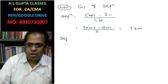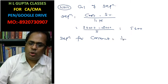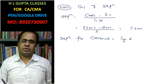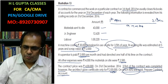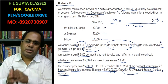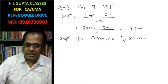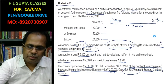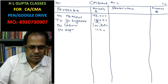Depreciation for the contract: the machine was utilized for one-fifth of the year in this contract. So depreciation for the contract = Rs. 5,600 × 1/5 = Rs. 1,120. Enter depreciation: Rs. 1,120 on the debit side.